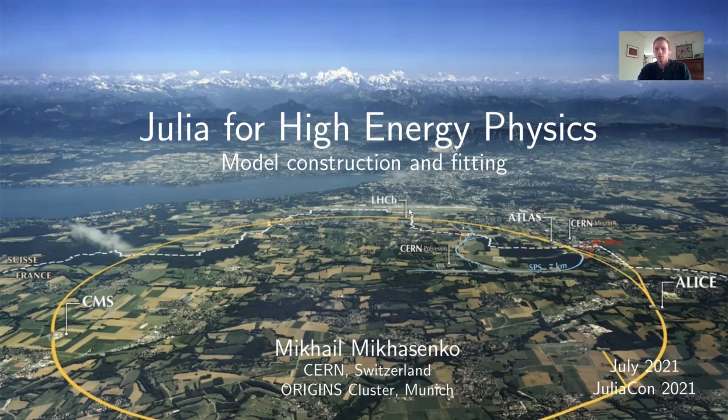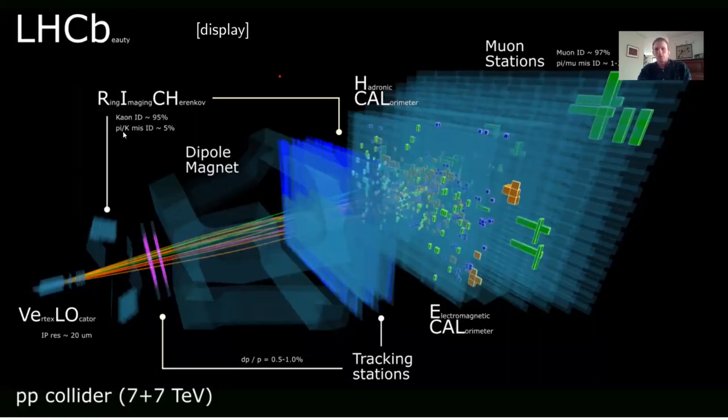Down 100 meters from the point on the surface where LHCb is shown here, you find the detector. That's a forward spectrometer measuring the particles produced in the collision of two protons.